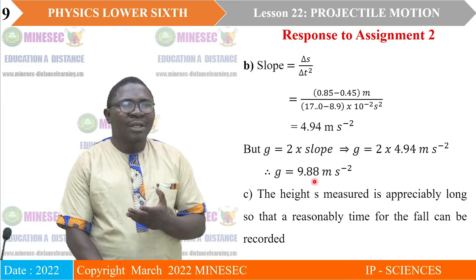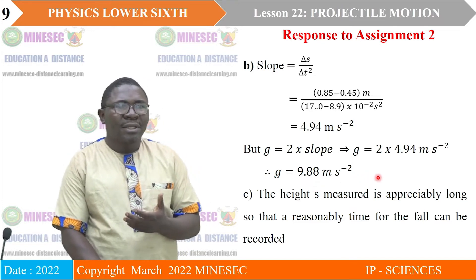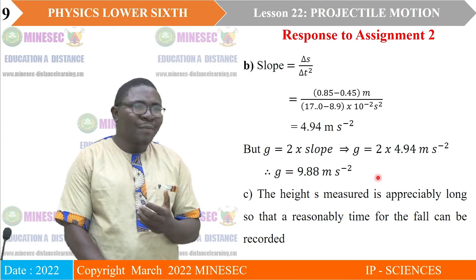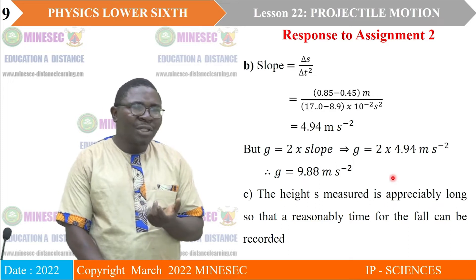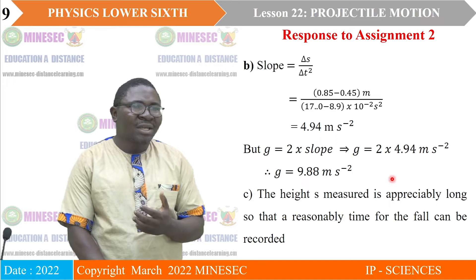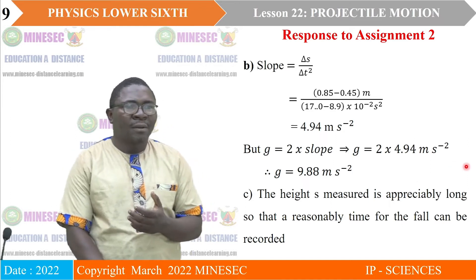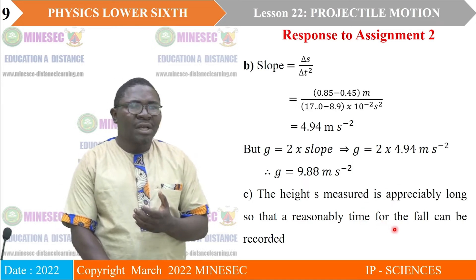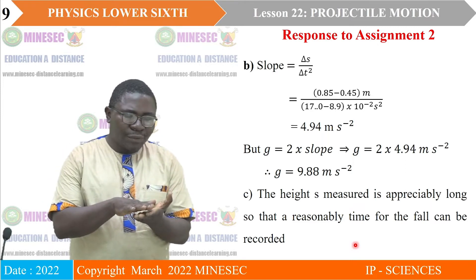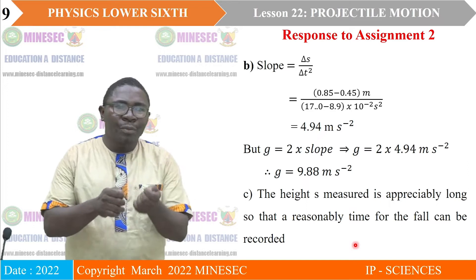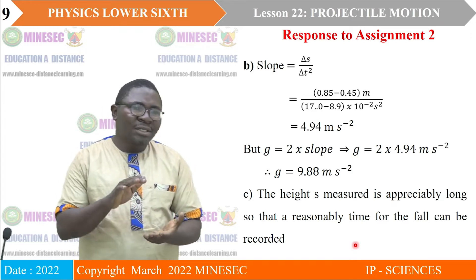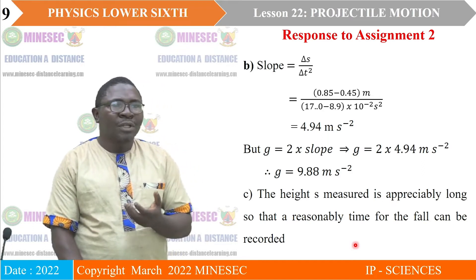Some of you might have had a value a little bit lower or a little bit higher — that is not wrong. Your values can be between 9.6 to about 10.4, and that is okay. But if your value goes up to 11 or down to 8, that means there is a problem — you did not choose a good scale. The precaution: the height measured should be appreciably long so that a reasonable time for the fall can be recorded, since a very short distance may not allow enough time to record accurately.